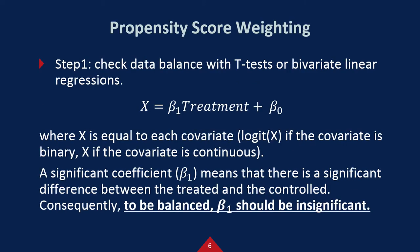We have five steps to do PSW. The first step is checking data balance with t-tests or bivariate linear regressions. This example is a bivariate linear regression. If your covariate is continuous, you will use OLS. And if your covariate is binary, you will use logistic regression.